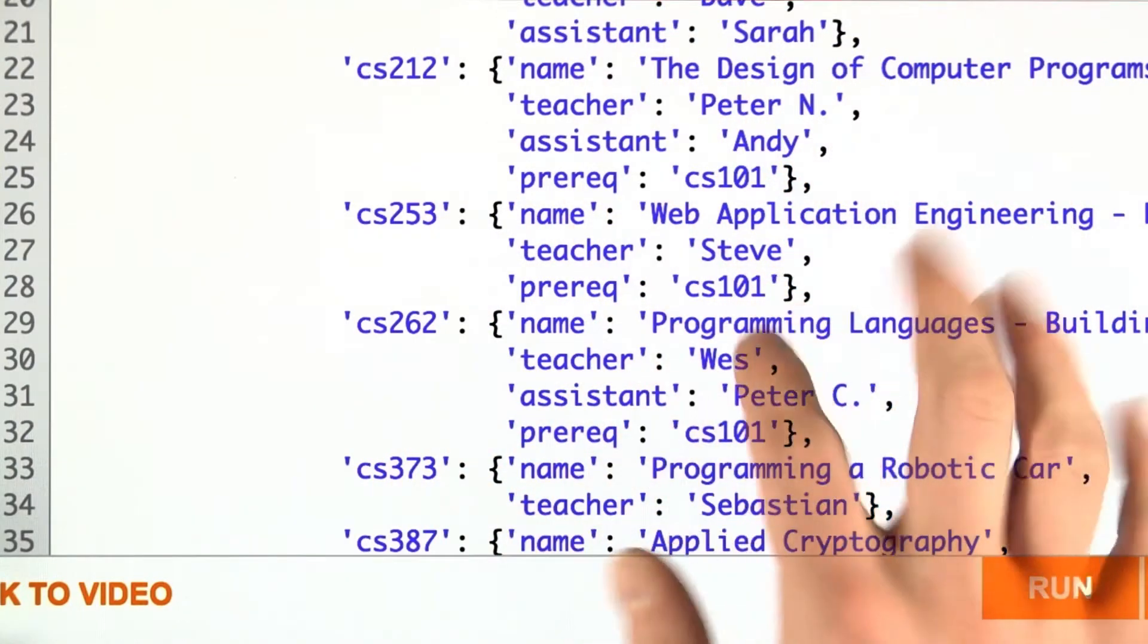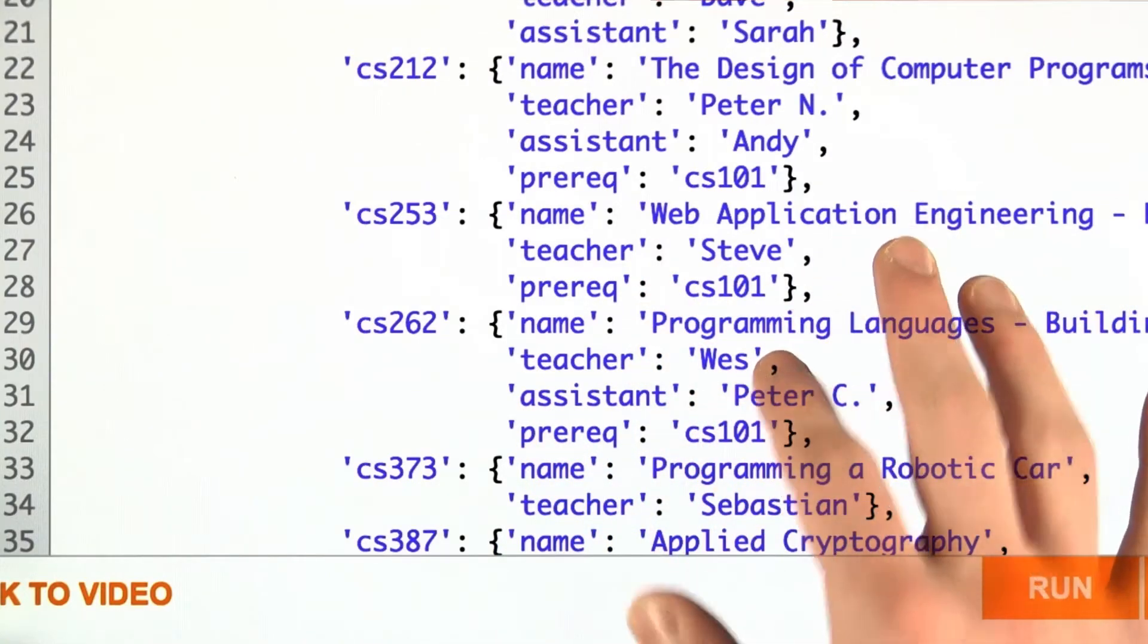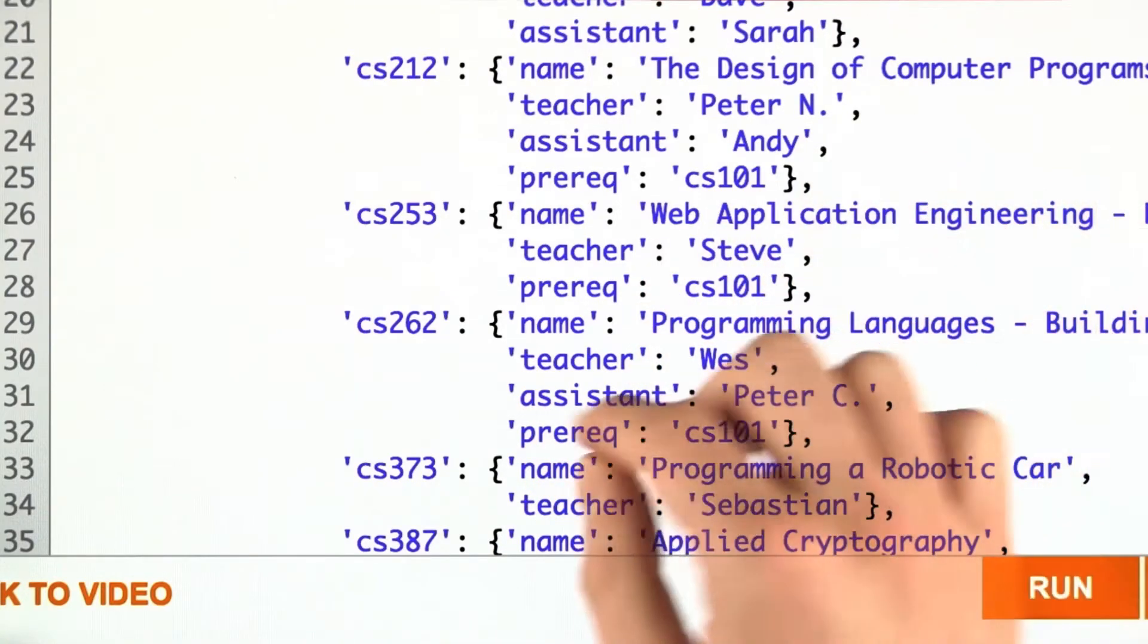So, if we're looking for Steve, Steve is associated with his class CS253, the web engineering building a blog. And so that's what we're going to do.